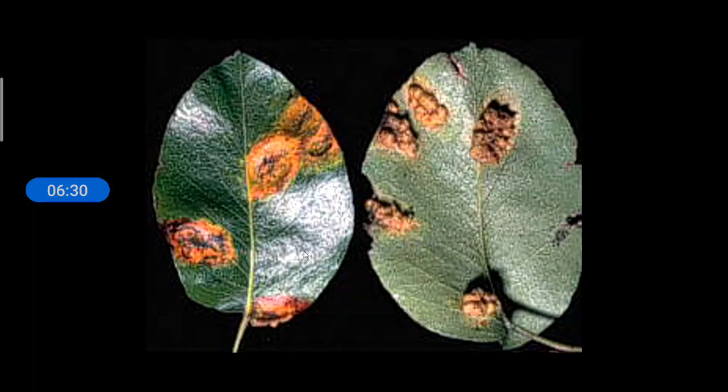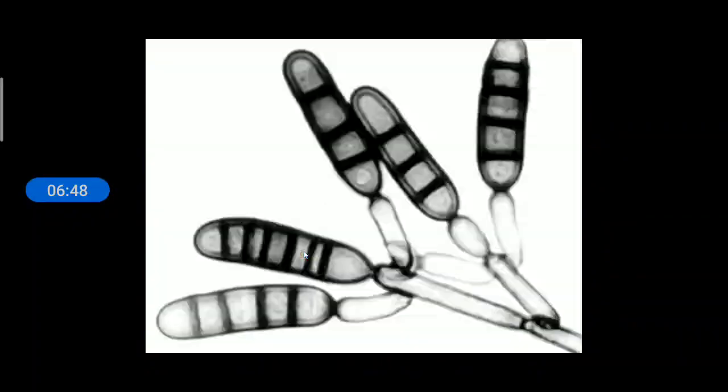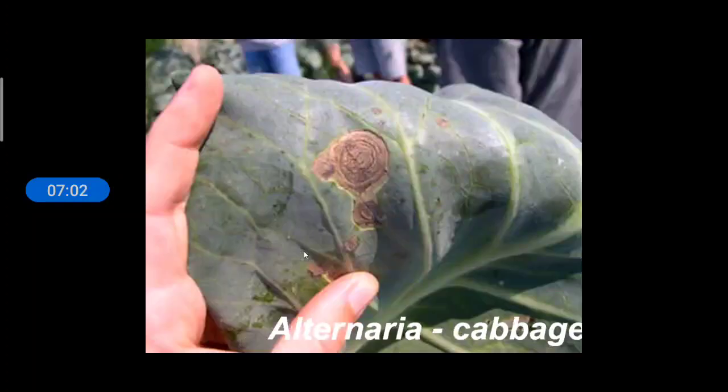The third group, that is Basidiomycetes. Now next we can go to the last group, Deuteromycetes. Means imperfect fungus. Only the asexual spores are known. Their sexual spores are not known. So they are called as imperfect fungus. Once the sexual spores are known, they can be either grouped under Basidiomycetes or Ascomycetes. And these are their asexually reproducing spores called Conidium. But now they have been moved to Ascomycetes. All these members of this group are moved to Ascomycetes.